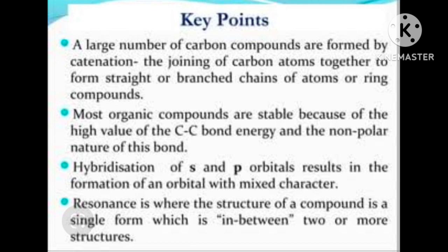Key points of catenation: A large number of carbon compounds are formed by catenation—the joining of carbon atoms together to form straight or branched chains or ring compounds. Most organic compounds are stable because of the high value of carbon-carbon single bond energy and the non-polar nature of this bond. Hybridization of s and p orbitals results in the formation of orbitals with mixed character—hybridization may be sp, sp2, or sp3. Resonance is where the structure of a compound is a single form which is in between two or more structures.